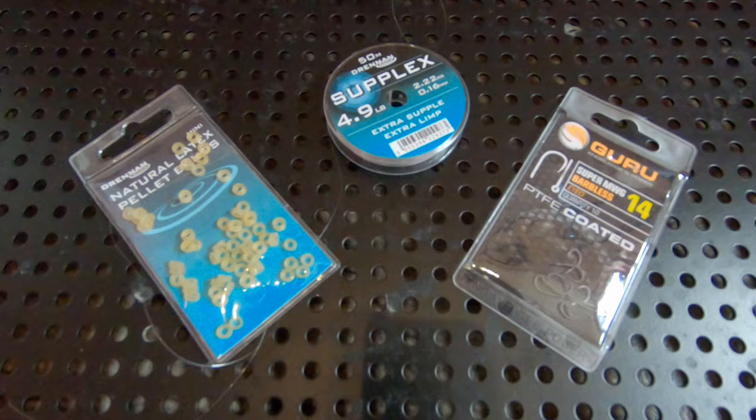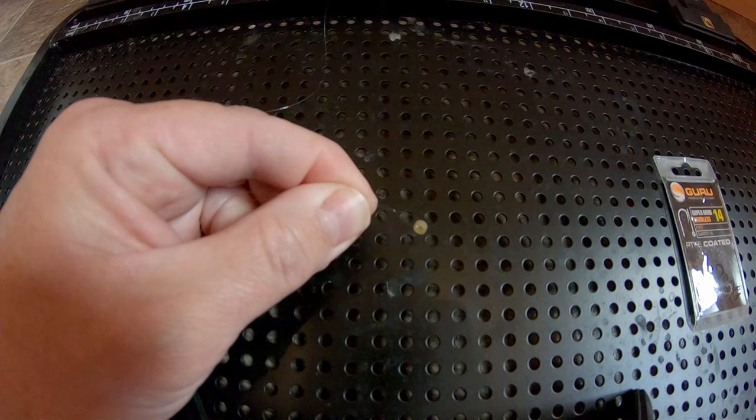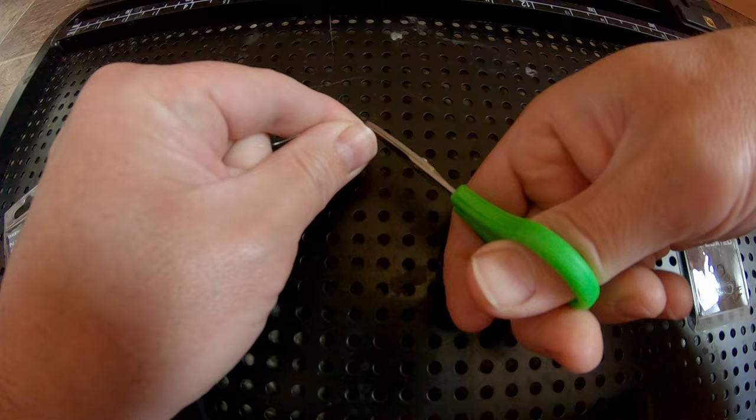To secure our pellet band onto the line, thread the line through the band itself and then tie a simple overhand loop knot to lock it in place. Trim off the tag and you're ready to form our knotless knot.